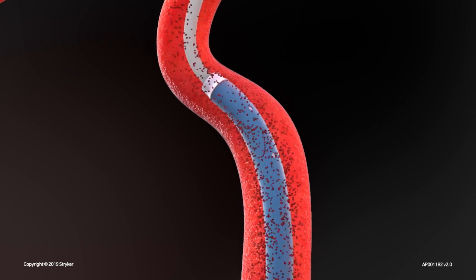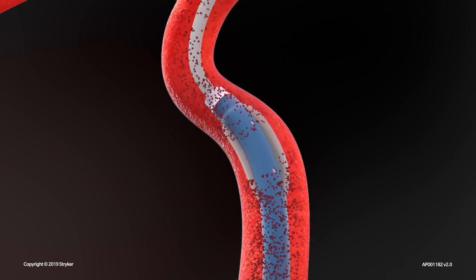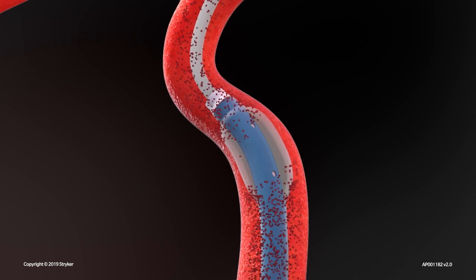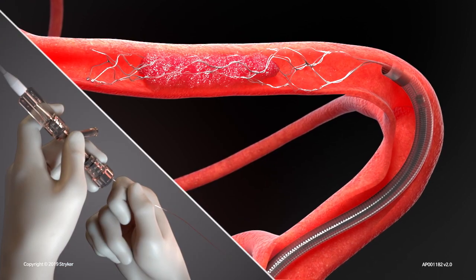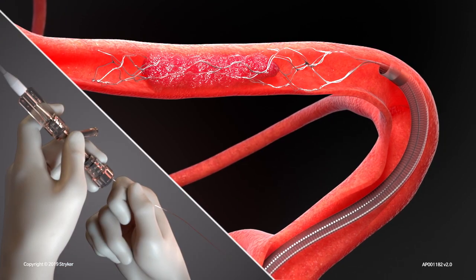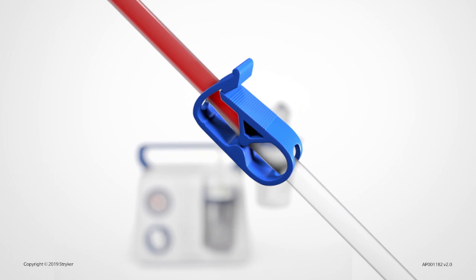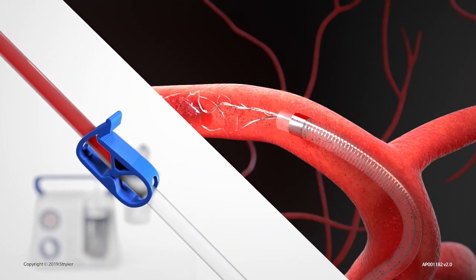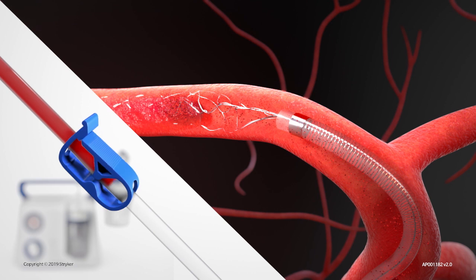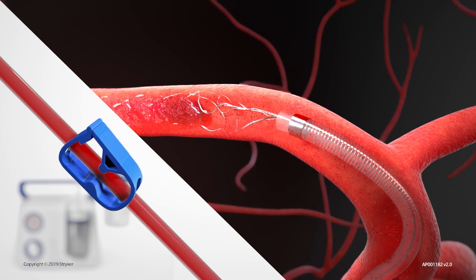Prior to retrieval, the balloon guide catheter is inflated to control proximal flow. The microcatheter may be removed to allow for a larger channel for aspiration. Connect the aspiration tubing to the access catalyst distal access catheter and open the tubing clamp to initiate aspiration.